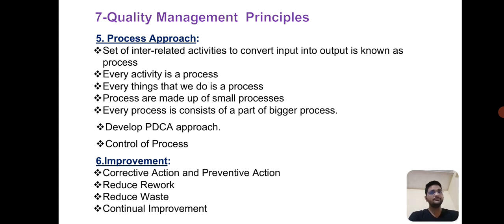Next is improvement. This includes corrective actions and preventive actions. Improvement types are continual improvement and continuous improvement. Reducing rework and wastage is also part of improvements.